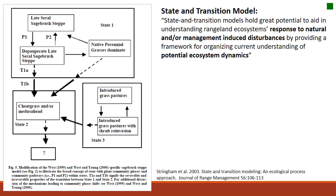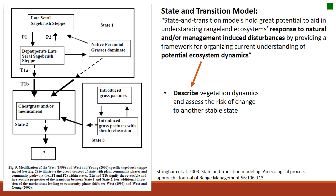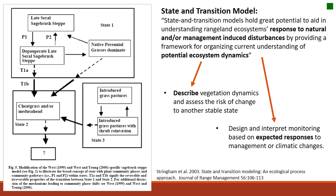If linear succession doesn't really work to explain all of the ecosystem dynamics of rangelands, what provides a framework so we can conceptualize what could happen in a plant community? That's where state and transition models come into play. State and transition models essentially do two things: they describe vegetation dynamics — what can your vegetation be within a stable state — and they describe how different vegetation types respond to natural or management-induced disturbances and how those disturbances shift vegetation dynamics.